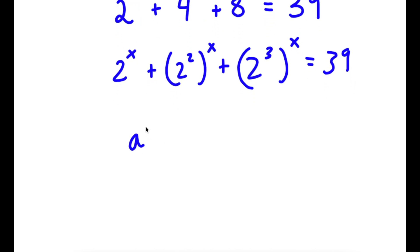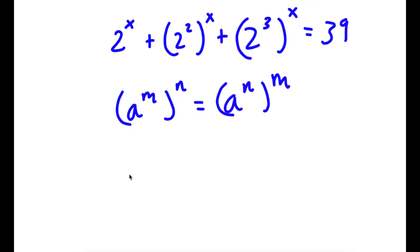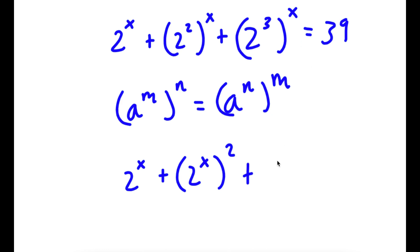Now, if I have something in the form a to the power of m to the power of n, this is the same thing as a to the power of n to the power of m. So 2 to the power of 2 to the power of x, I can rewrite as 2 to the power of x to the power of 2, and 2 to the power of 3 to the power of x, I can rewrite as 2 to the power of x to the power of 3.